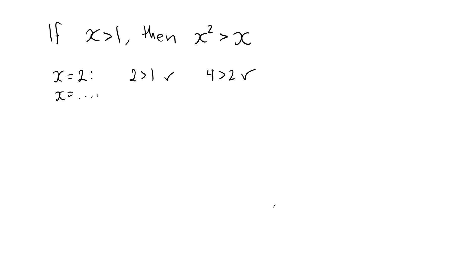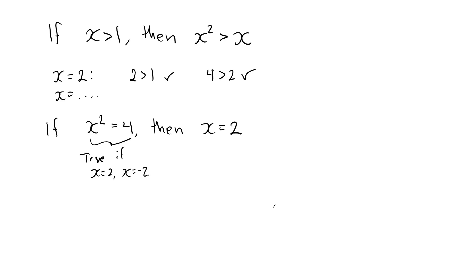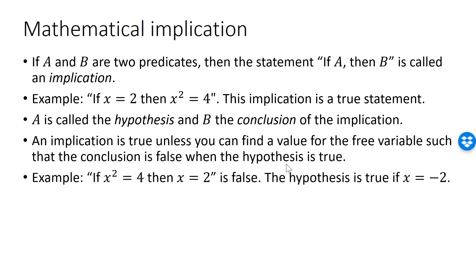Here is an example of a false implication. If x squared is equal to 4, then x is equal to 2. The hypothesis is true when x is equal to 2 and when x is equal to minus 2. Since the conclusion x is equal to 2 is false when x is equal to minus 2, the implication is false. The implication is false for this specific value of x, which means that the implication itself is false. Remember, it's enough to find one value of the variable which makes the implication — viewed as a predicate — false, to make the implication viewed as a statement false.